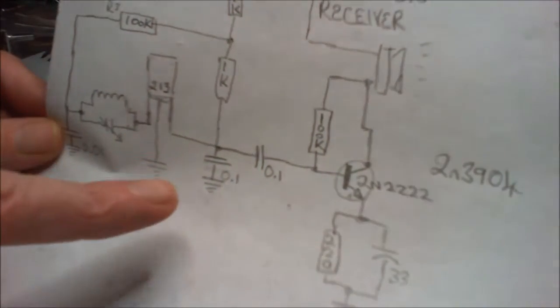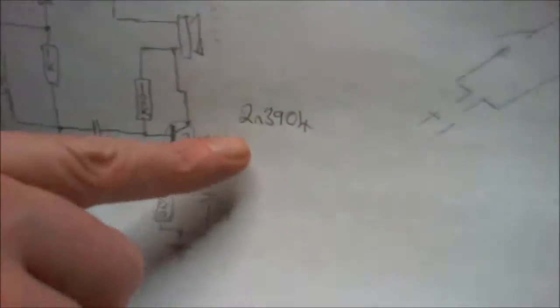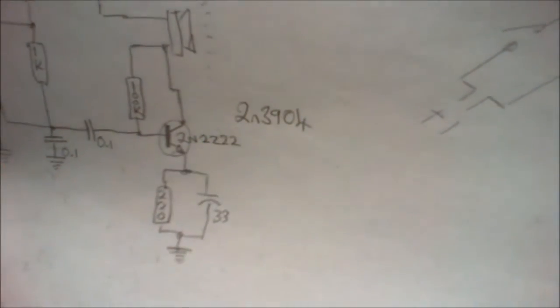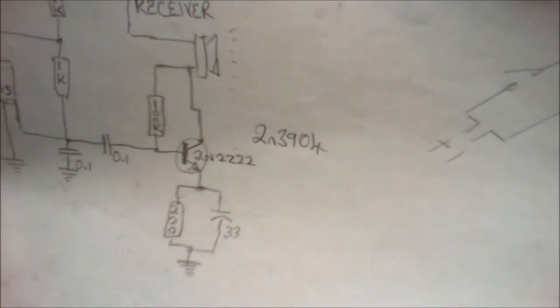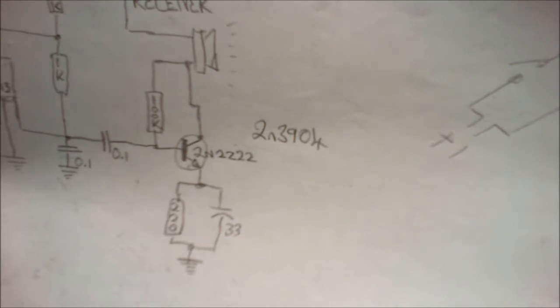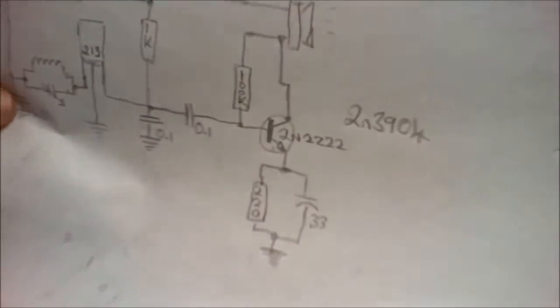The circuit that I've copied, this one here, which is one that I just saw on the internet, it uses a 2N3904 transistor here, and I've put a 2N2222 in because I didn't have a 3904. But I did compare the datasheets and the characteristics are pretty much the same, so I figured that would probably be okay.